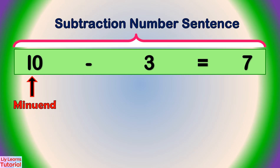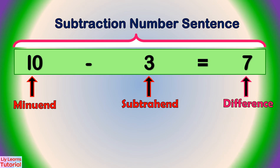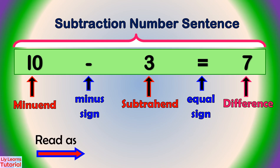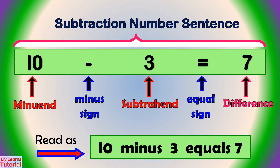This is a subtraction number sentence: 10 is the minuend, 3 is the subtrahend, 7 is the difference. This is a minus sign and this is an equal sign. We can read this as 10 minus 3 equals 7.